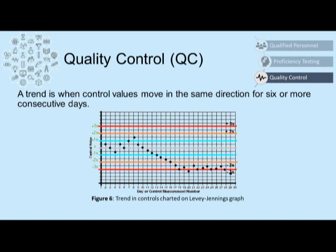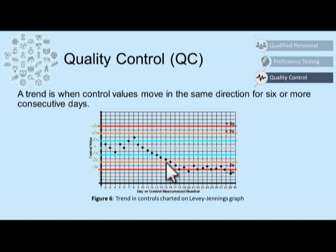A trend is when a control value moves in the same direction for six or more consecutive days. This example shows us a trend beginning to occur at day nine, where the control values steadily begin to drop, and by day 15 we have a trend with six or more consecutive days of control values falling in the same direction. By day 16 and 17, we're scratching the surface of our control values falling outside of three standard deviations, which would be an unacceptable control value.